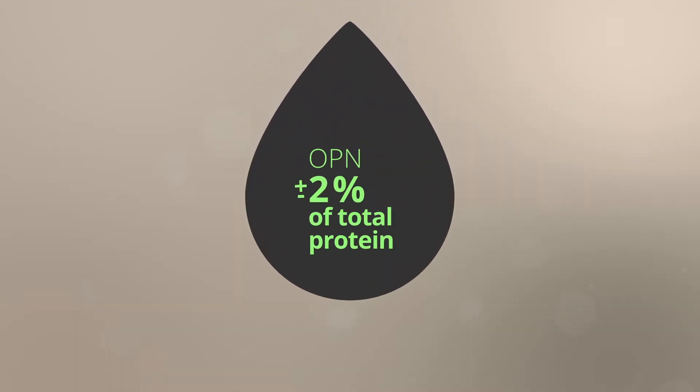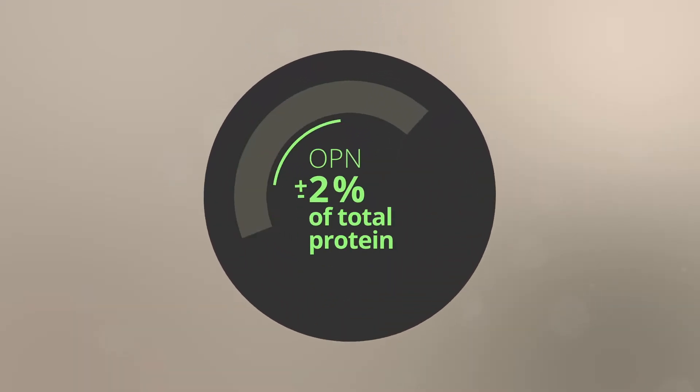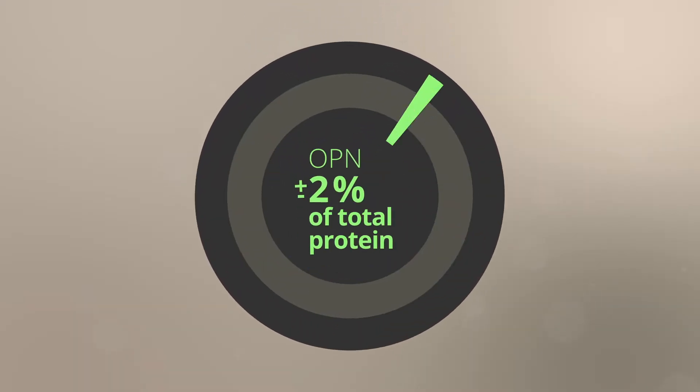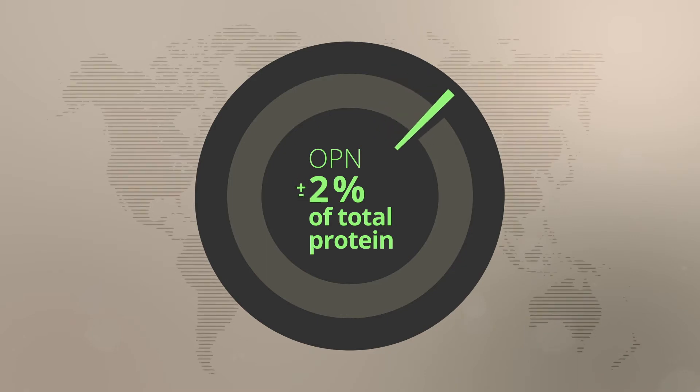In human milk, OPN represents about 2% of total protein, but this will vary based on geographical location and stage of lactation.